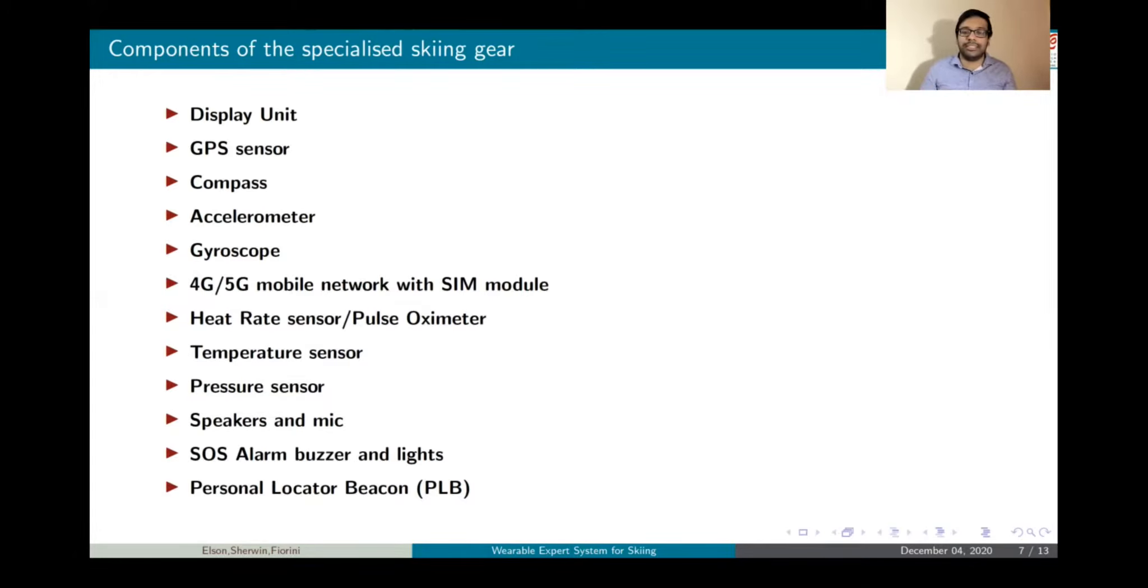Next up, we have the GPS sensor. The GPS sensor is necessary to find out the position of the skier in real-time. We also have a compass just in case the skier might lose its direction. We also have an accelerometer that records the G sensors and the forces that are experienced by the skier during the skiing activity. This is essential for measuring the performance of the skier. We also have a gyroscope that measures the rotational information. And we also have a 4G and 5G mobile network with SIM module so the user can get real-time information from the expert system without any loss of connectivity.